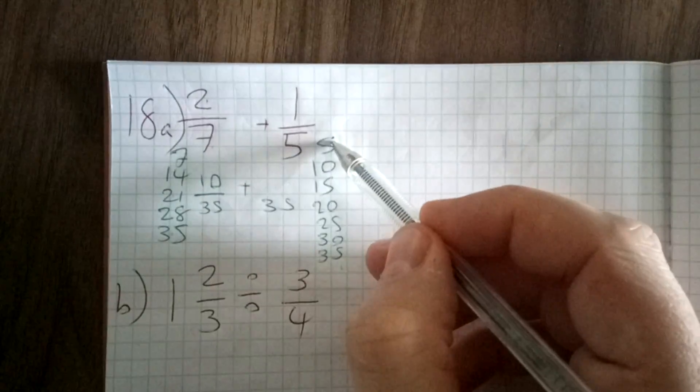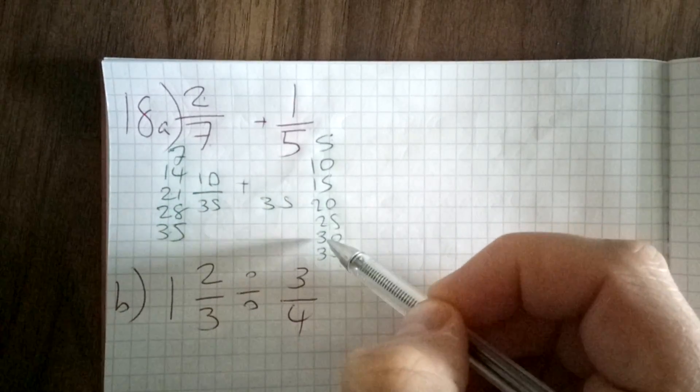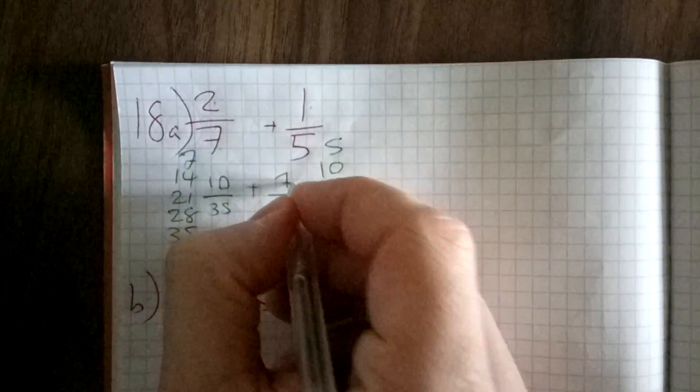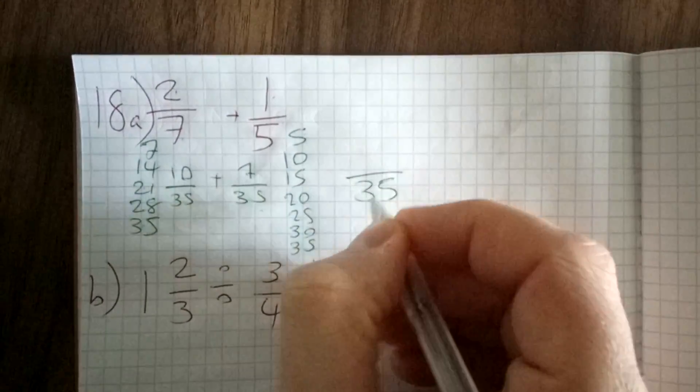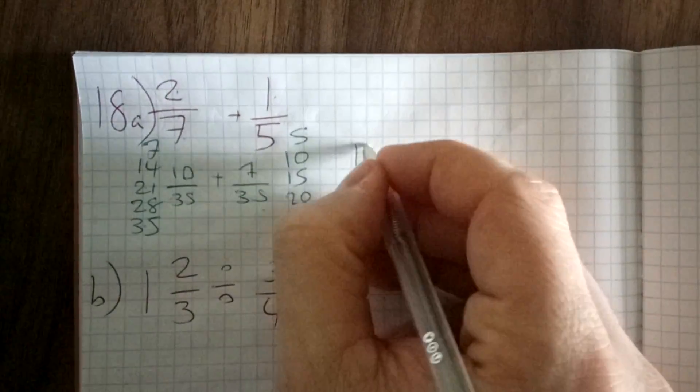And if you want to test, you count 1, 2, 3, 4, 5, 6, 7, so you times the top by 7. Now the denominators are the same, so I keep the denominator the same, which is 35, and 10 plus 7 is 17. So 17/35.